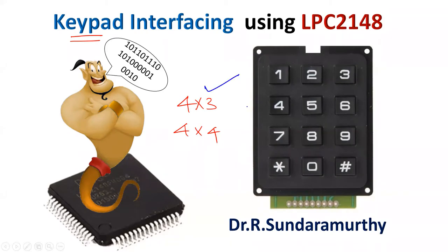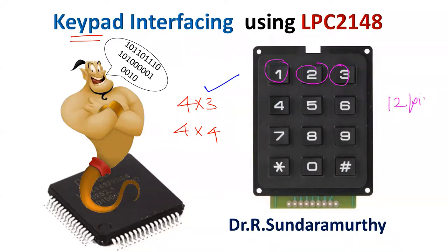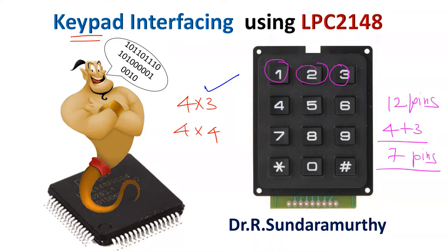The main objective behind using a matrix keypad is that the keys are arranged in matrix format in rows and columns, thereby reducing the number of pins required from the host microcontroller. For example, in this case you have 12 keys. If you use one pin per switch, you end up using 12 pins. Whereas if you arrange them in a matrix format of 4 rows and 3 columns, you use only 7 pins total, saving nearly 5 pins.